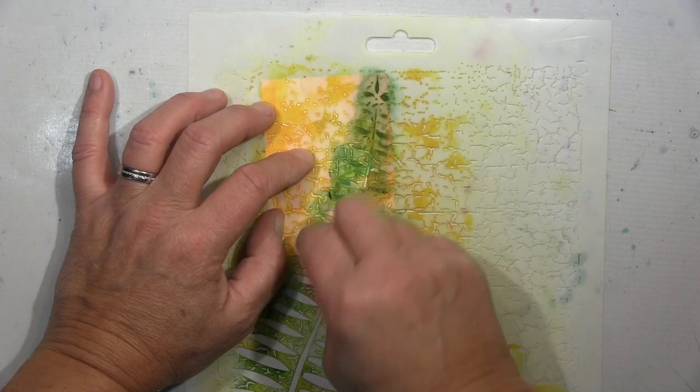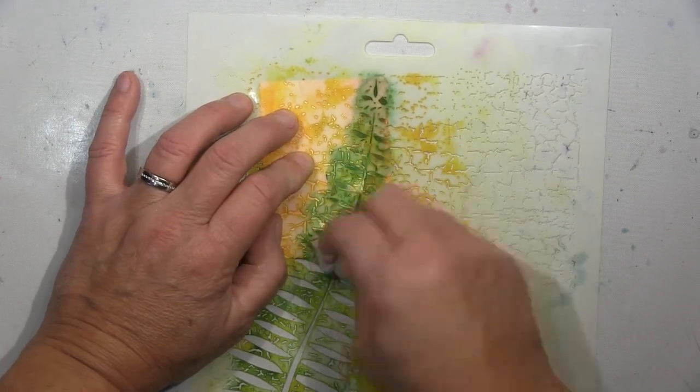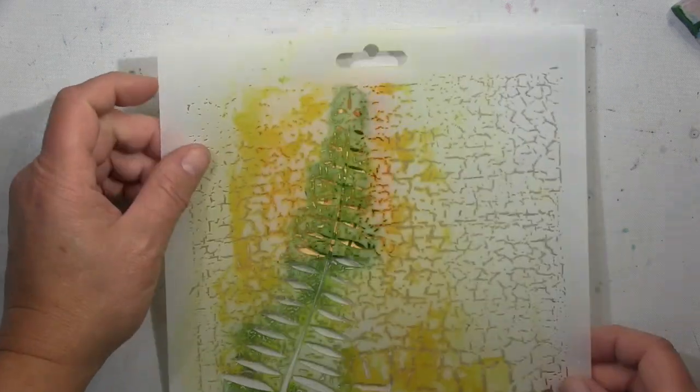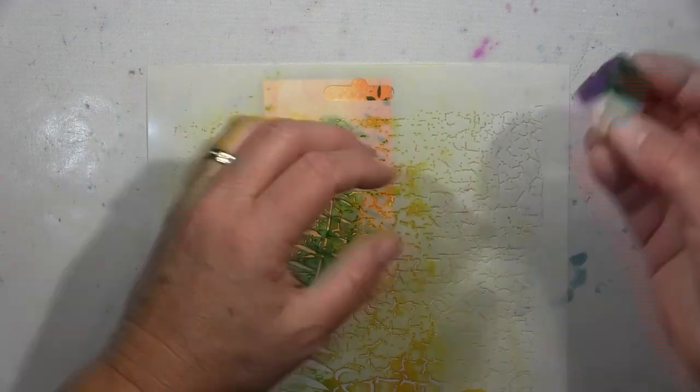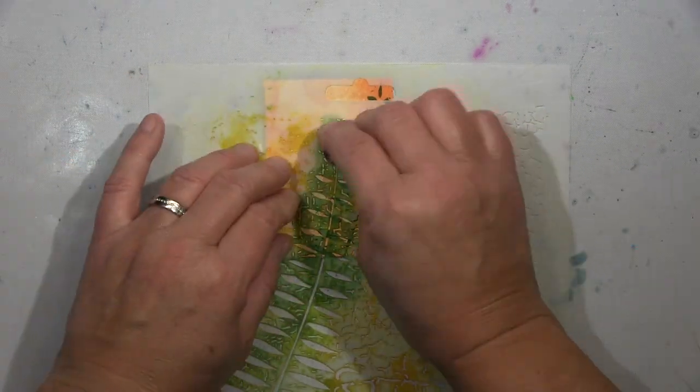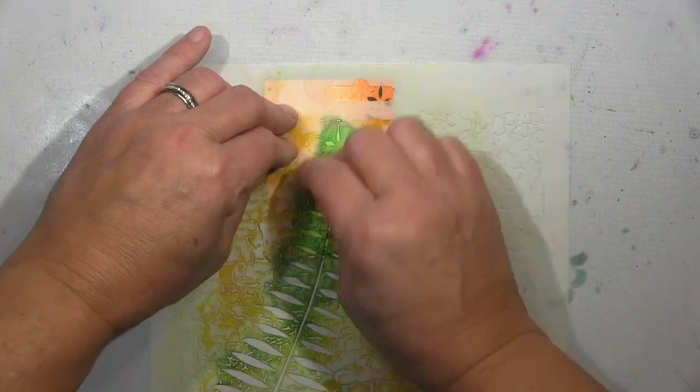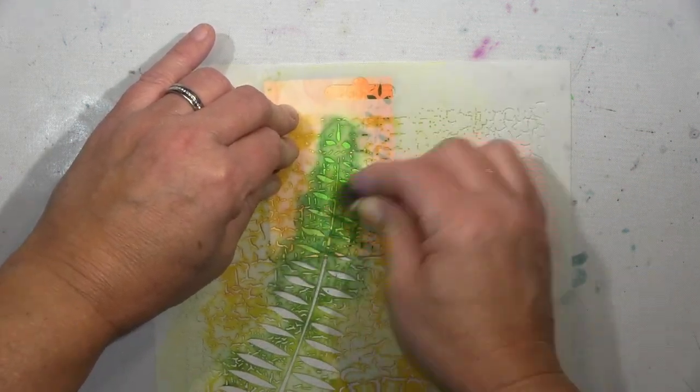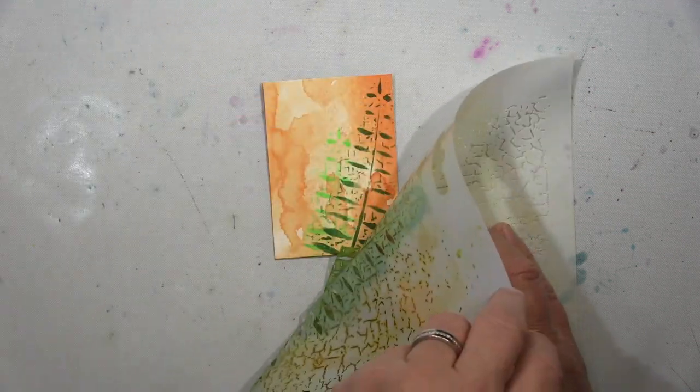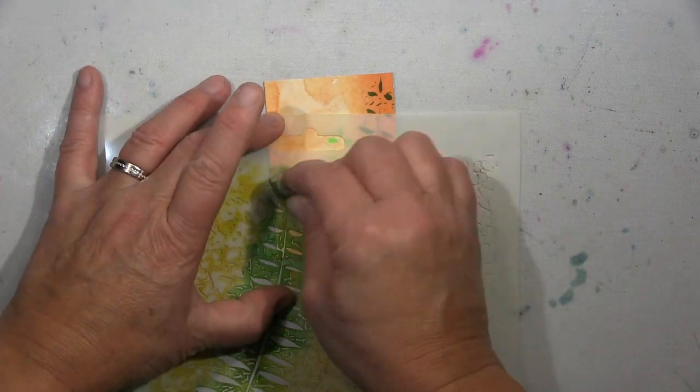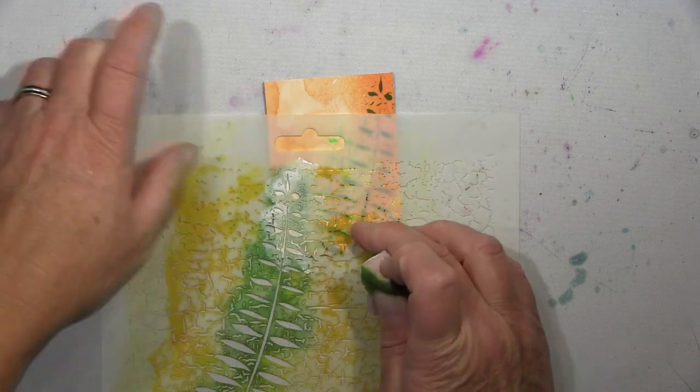So ihr Lieben, ich arbeite hier auf ATCs und zwar mache ich das gerne wenn ich so leftover übergebliebene bunte Papiere habe. Die schneide ich mir dann zu ATC Größen und arbeite dann drauf. Ich habe angefangen auszustanzen. Ich hatte mit Alkohol Inks entweder auf Yupo gearbeitet oder eben auf Fotopapier, weiß ich jetzt gar nicht mehr genau.